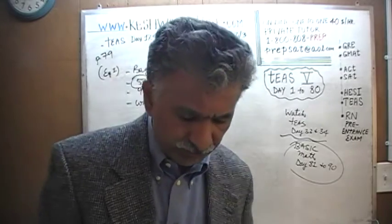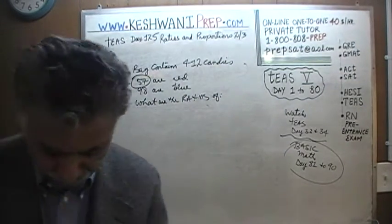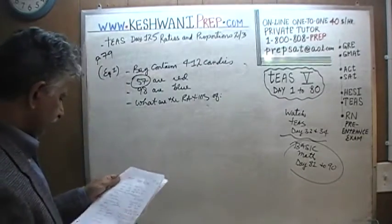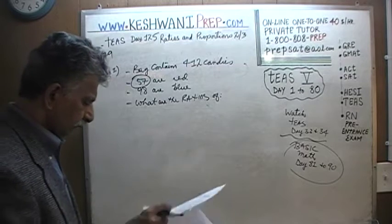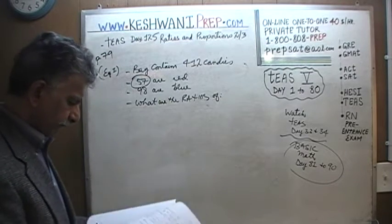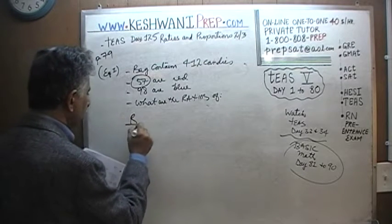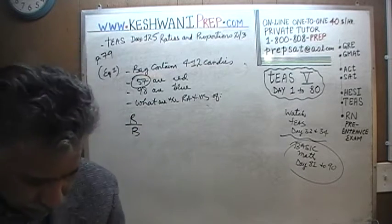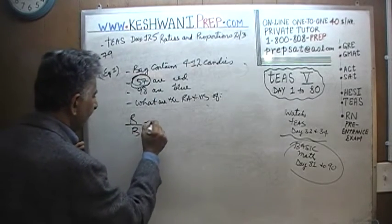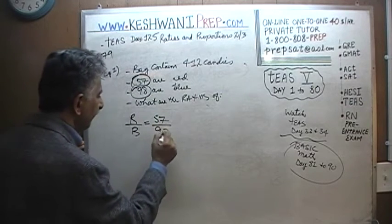The question is: what are the ratios? We are being asked to find three ratios. The first is red to blue, which is very straightforward. We know how many red we have — 57 red — and how many blue — 98 blue. That's it, we are done.